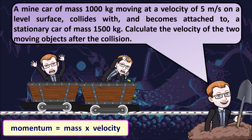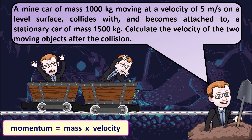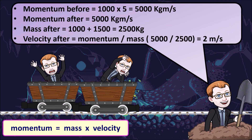Looking at this example: a mine car has a mass of 1000 kilograms moving at a velocity of 5 meters per second on a level surface, and it collides with another mine car that has a mass of 1500 kilograms. To calculate the velocity after the collision, we first work out the momentum before: 1000 times 5 gives us 5000 kilogram meters per second.